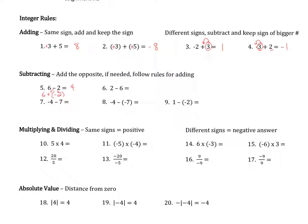We can do that for all of these — we can say this is 2 plus a negative 6, and use the addition rule with different signs. Using that rule: 6 minus 2, then take the sign of the larger number. For example, negative 4 minus 7 becomes negative 4 plus a negative 7, which is negative 11 — they have the same sign, so we add 4 and 7 to get 11 and keep the negative sign.